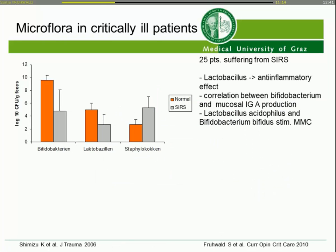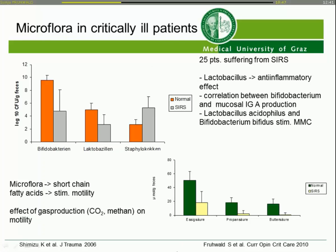There is also a problem with microflora. There is an increase of problematic parts of the microflora and a decrease of beneficial bacteria like Bifidobacteria and Lactobacillus, which are important for their anti-inflammatory effect, stimulation of motility, and production of immunoglobulin A. Microflora also produces short-chain fatty acids — like butyric acid — which stimulate motility, as does the gas production such as CO2.